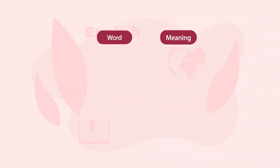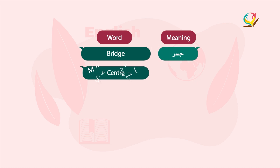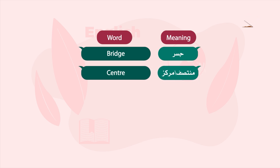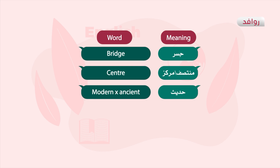Let's talk about the word and meaning. The meaning of bridge — bridge means جسر (bridge). The meaning of center is منتصف أو مركز (middle or center). The third word: modern means حديث (modern), and its opposite is ancient.